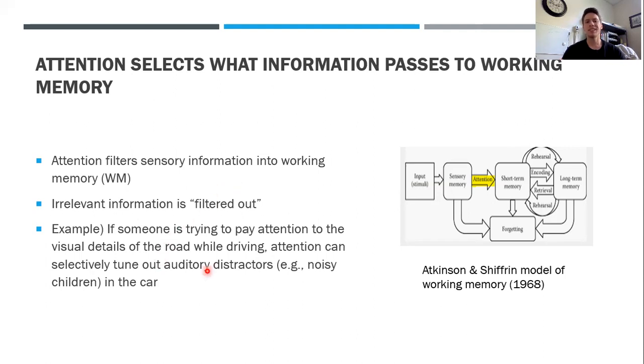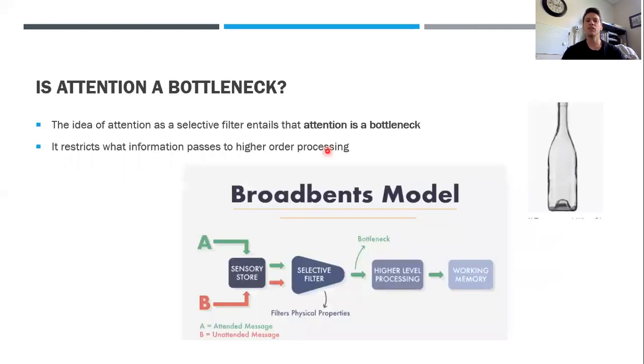Here's an example: imagine you're driving and you have a noisy child in your car. Attention is necessary if you want to really pay attention to the road and avoid getting into an accident. Attention can be useful for selectively tuning out auditory distractors—in this case, the noisy children in the car.